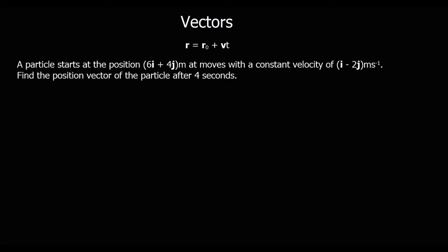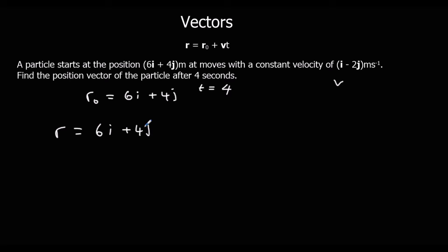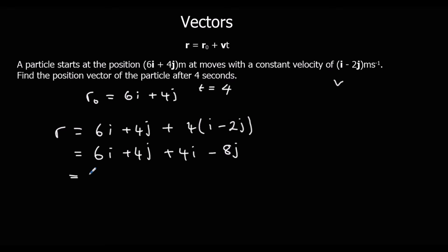Here's another similar question — pause the video and give it a go if you want, otherwise keep watching. We've got initial position r₀ = 6i plus 4j, velocity v = i minus 2j, and we need to know where it is after 4 seconds. So r = r₀ plus vt, which is 4 lots of the velocity i minus 2j. Expanding gives 4i minus 8j. Collecting like terms: 6i plus 4i is 10i, and 4j minus 8j is minus 4j. So the position after 4 seconds is 10i minus 4j.